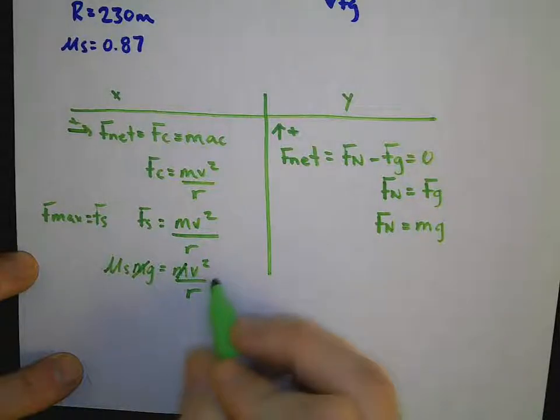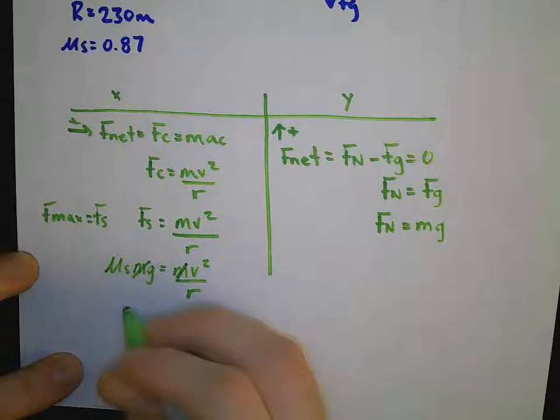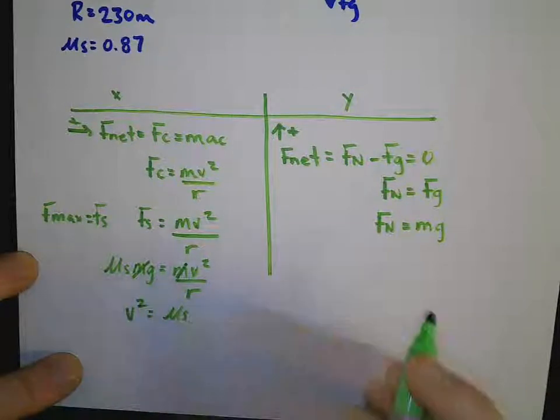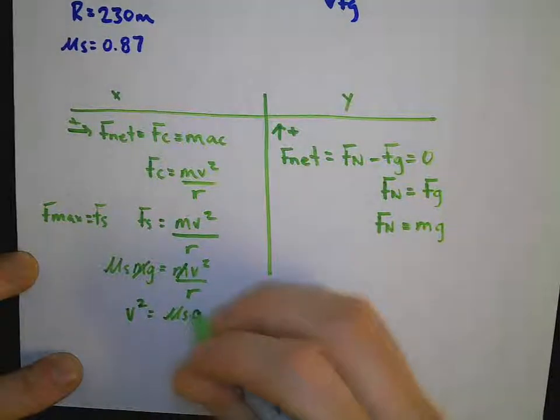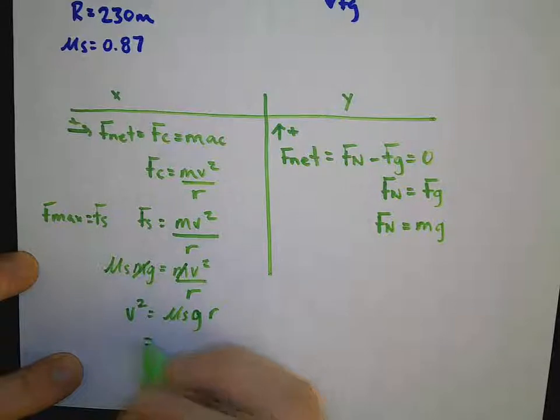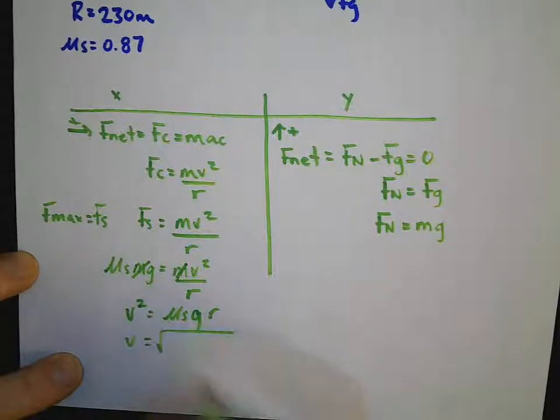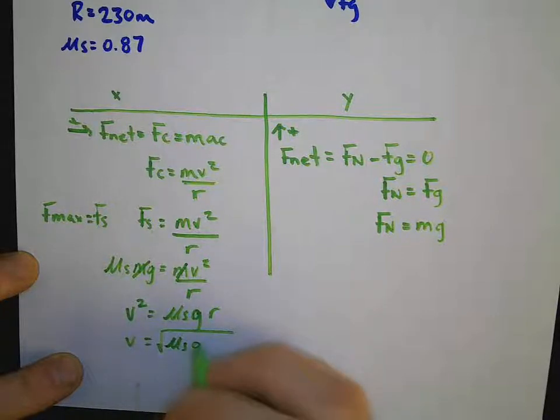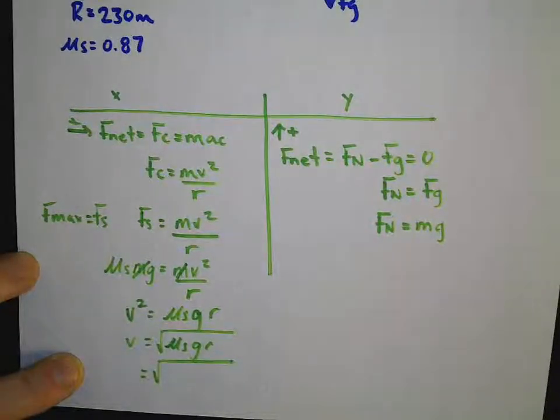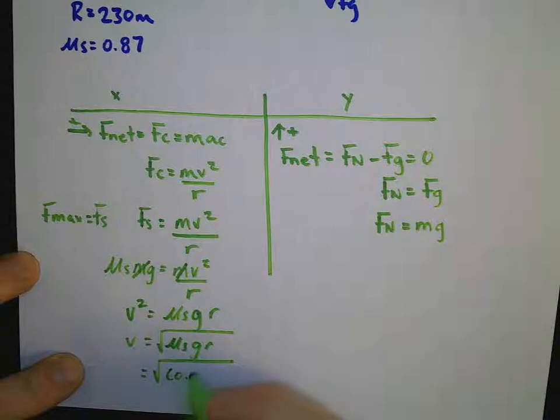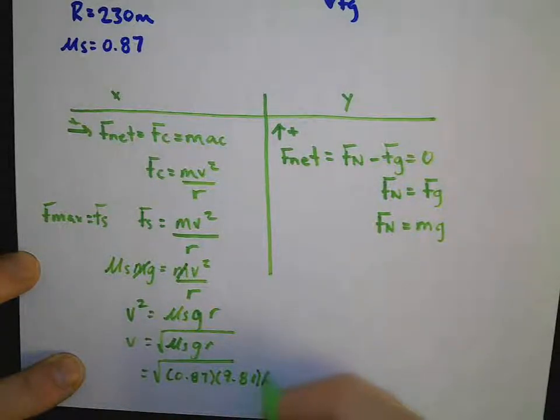And since I have masses on both sides of the equal sign cancelled out, I must multiply both sides of the equation by r. So that tells me v squared is mu s g r. So v will be calculated by taking the square root of mu s g r. So that will give us the square root of 0.87 multiplied with 9.81 and 230.